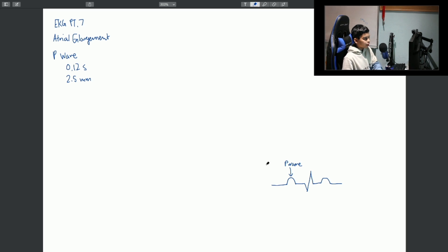And the first part, so if we take a P wave, this part represents right atrial depolarization, and this part represents the left atrial depolarization.